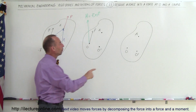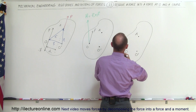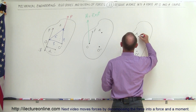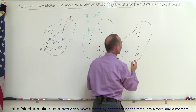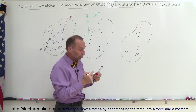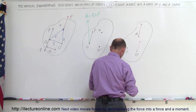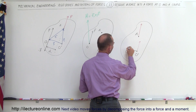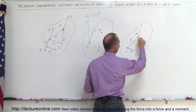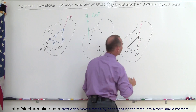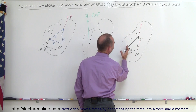Now, what if we move the force from point A to a different location, O prime? Again, it's not on the same line of action, so we need another moment to compensate. We define the vector from O prime to O as S. We have the original R vector from O to A, and R prime is the vector from O prime to A. We can observe that R prime equals R plus S.